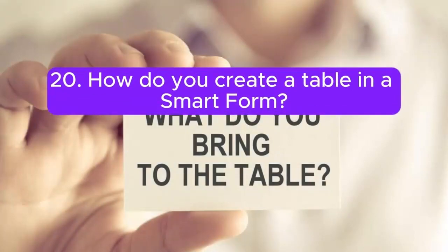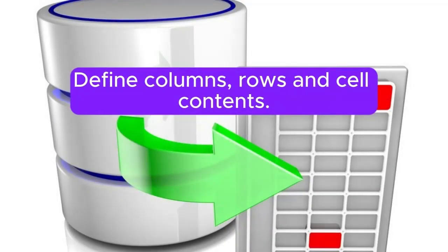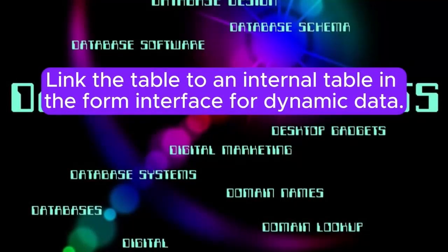20. How do you create a table in a SmartForm? Answer: Create a table in a SmartForm by using the Table Painter tool. Define columns, rows, and cell contents. Link the table to an internal table in the form interface for dynamic data.